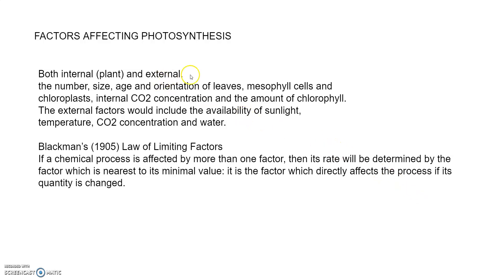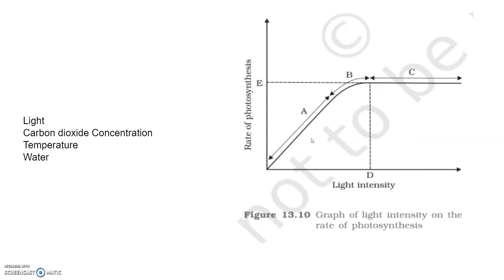Now, factors affecting photosynthesis. Both internal and external factors affect photosynthesis. As light intensity increases, the rate of photosynthesis also increases until the light saturation point. External factors include sunlight and temperature. Blackman's law of limiting factors states that if a chemical process is affected by more than one factor, then its rate will be determined by the factor which is nearest to its minimal value — it is the factor which directly affects the process if its quantity is changed. This law operates in photosynthesis.